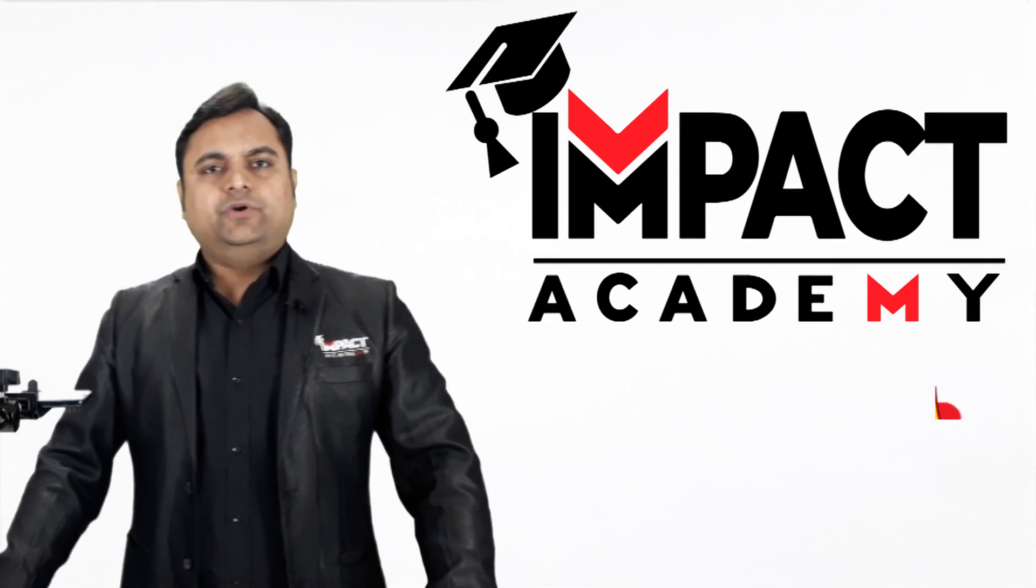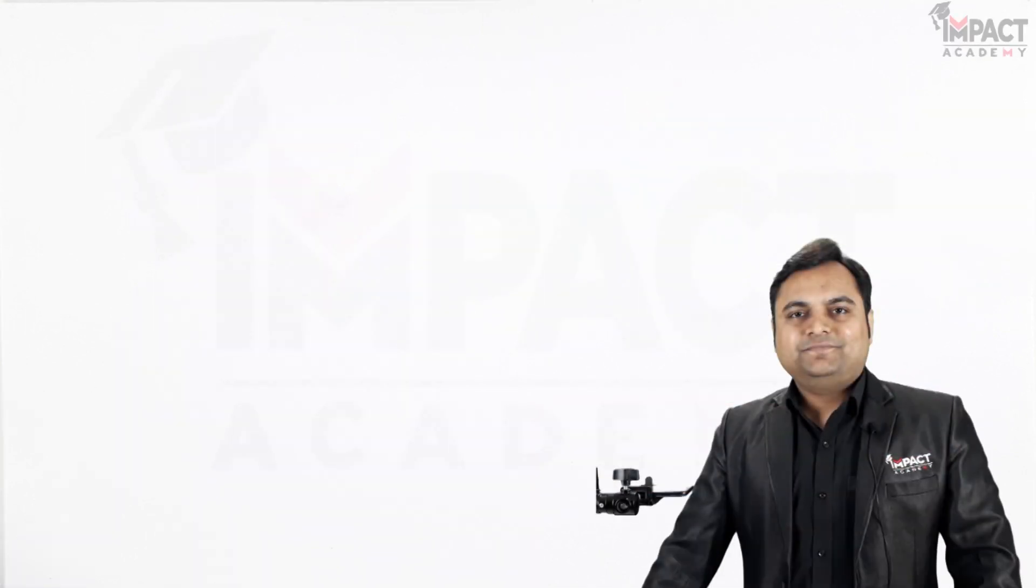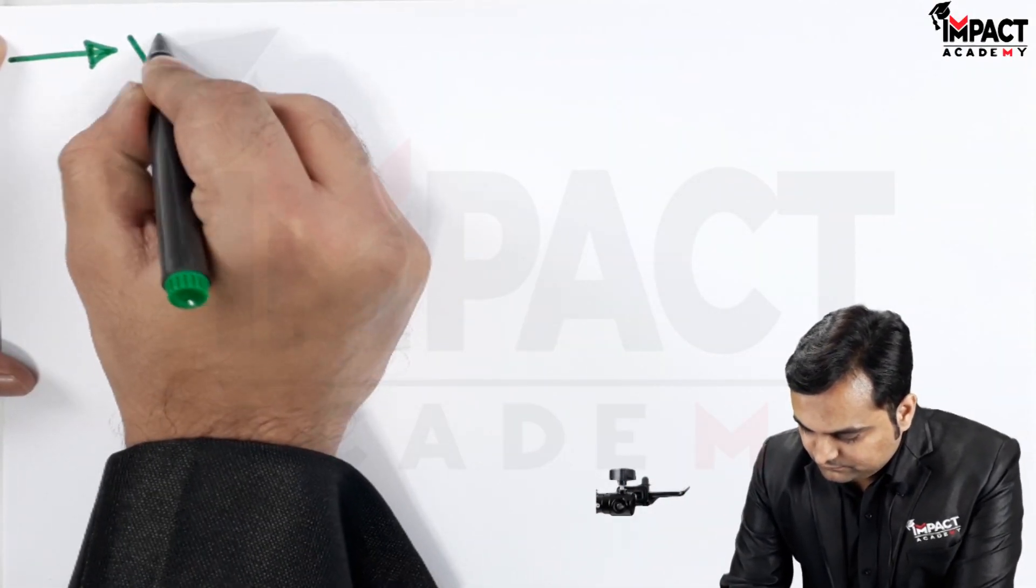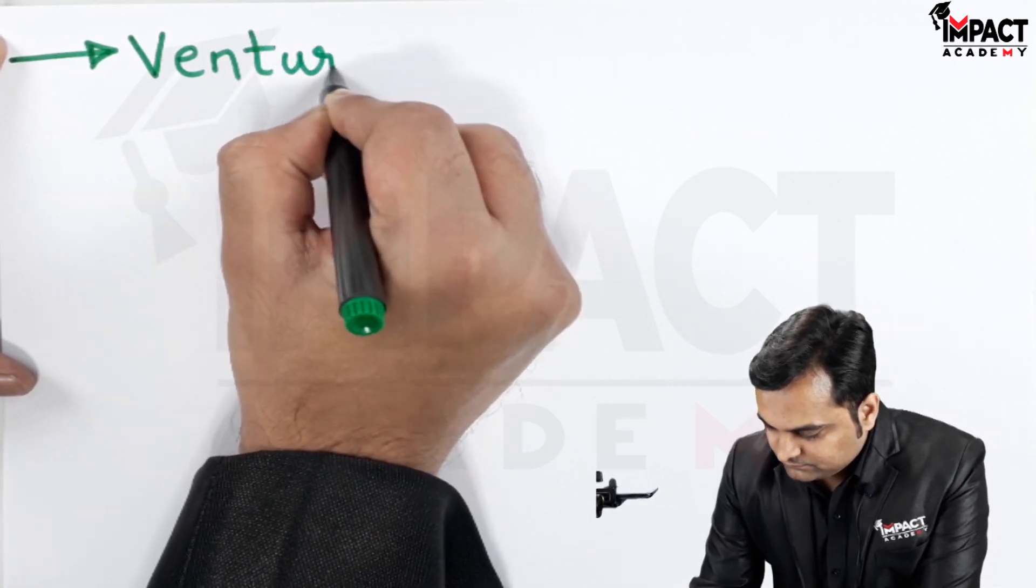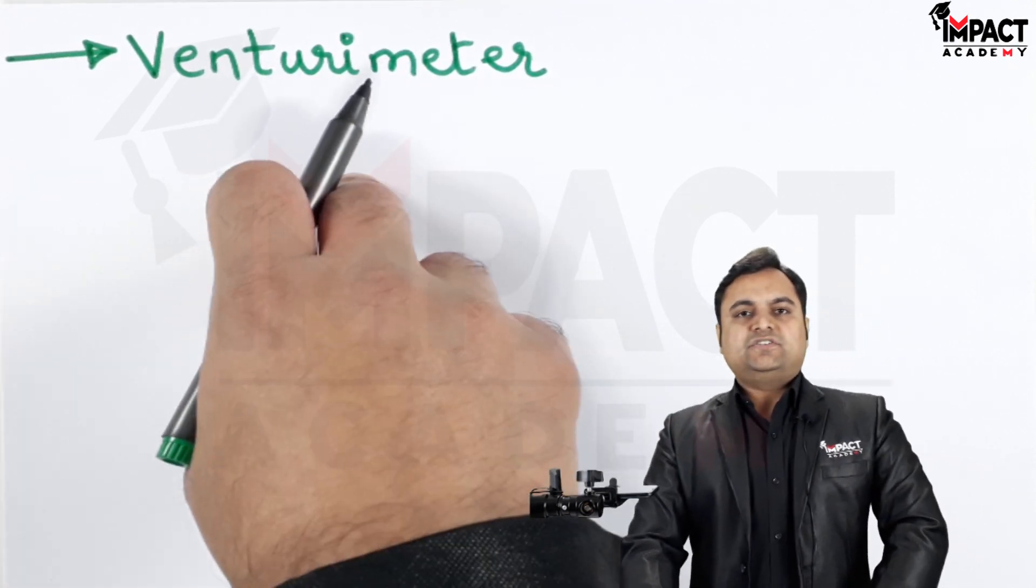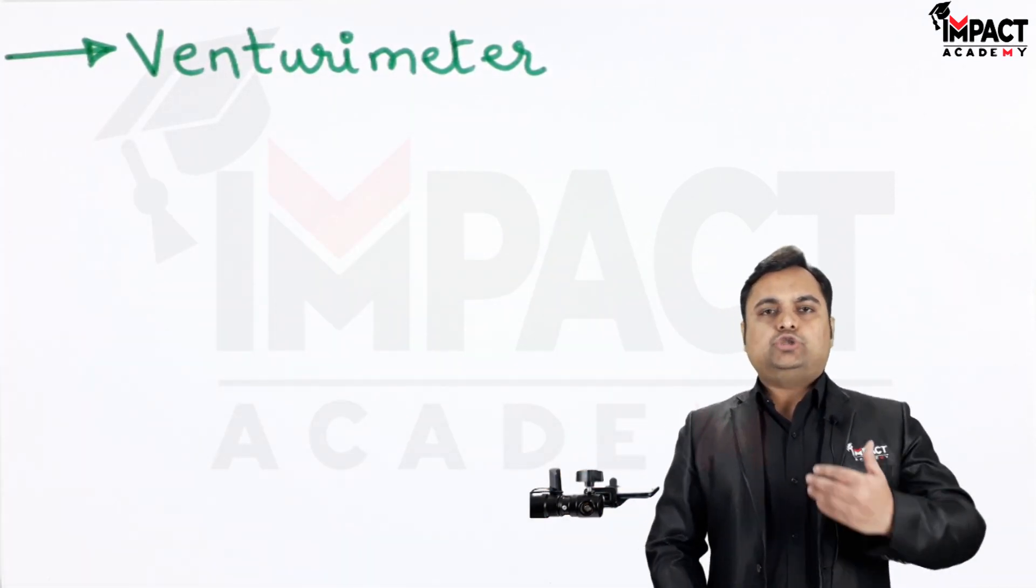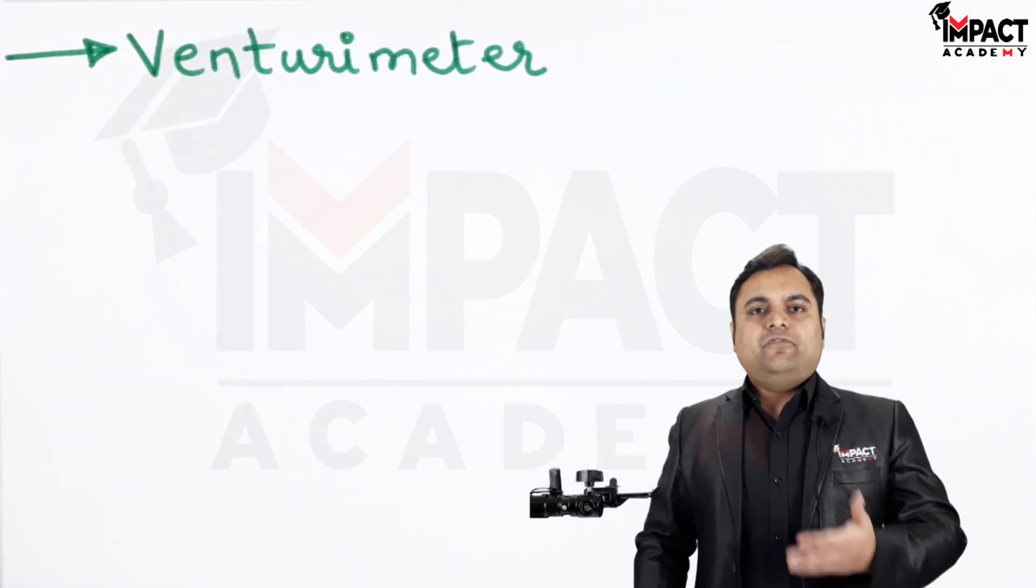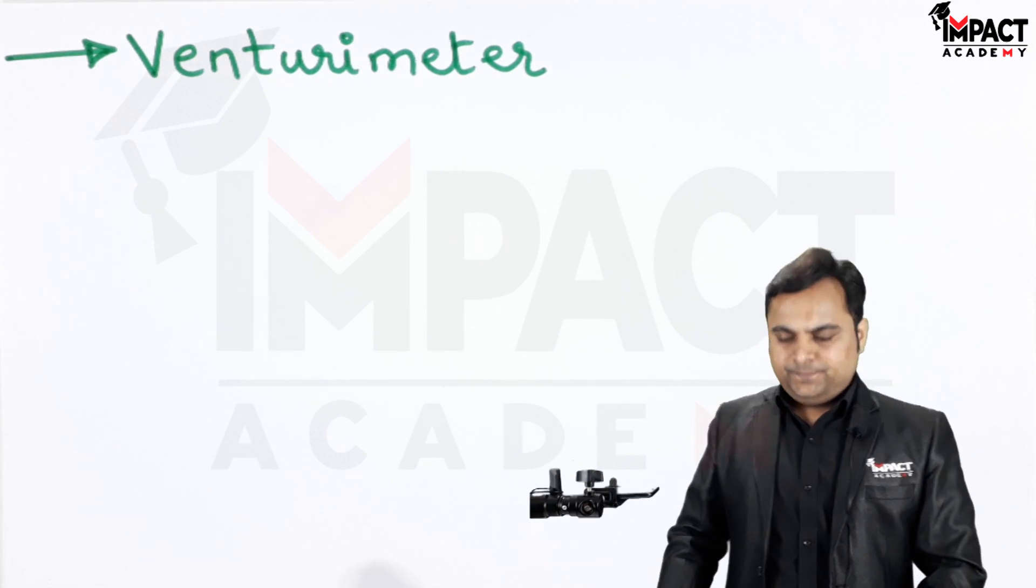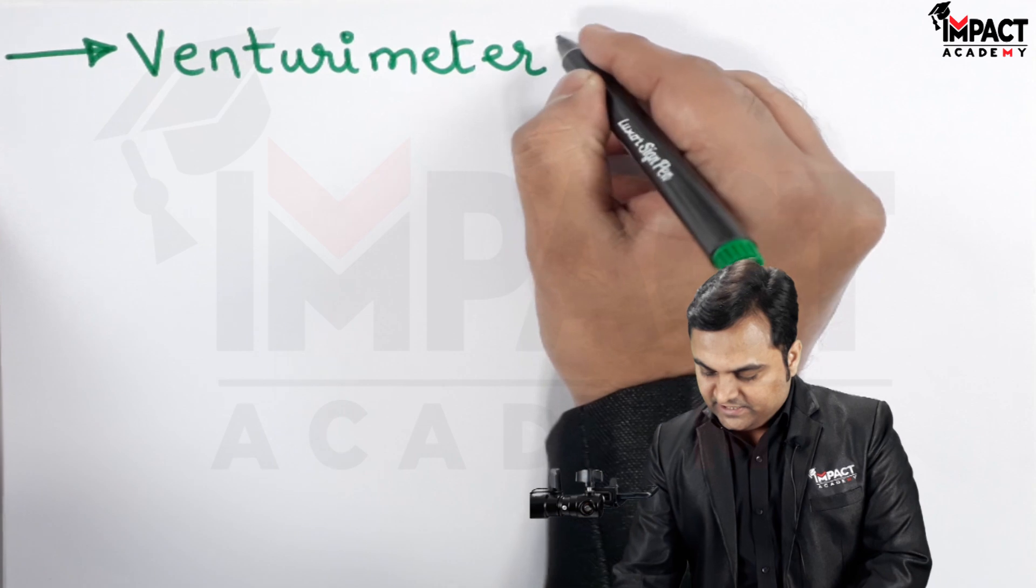Hi friends, here in this video we are going to see what is meant by a venturimeter. Now venturimeter is a device which is used to measure the discharge, also called as the flow rate of a flowing fluid or we can say a flowing liquid. And how that venturimeter looks like, for that I will just draw the diagram and explain.